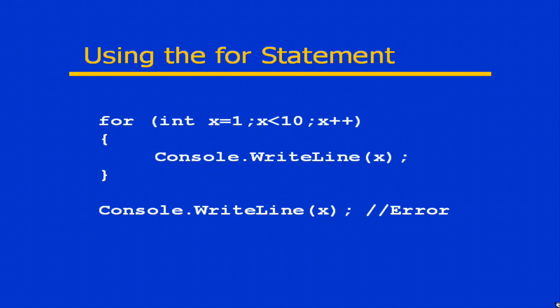Here's an example of a typical for statement. Inside the parentheses after the for, we're declaring an integer variable, int x equals 1. That's our counter variable. The second element is our condition, x is less than 10. Finally, we have an incrementation, x++.